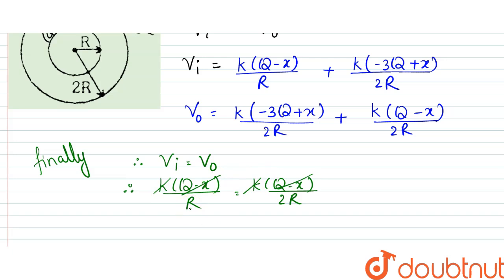So what we can write is from here, instead of cutting them, what we can do is we can subtract them. So k(Q - x)/2R would be equal to 0.